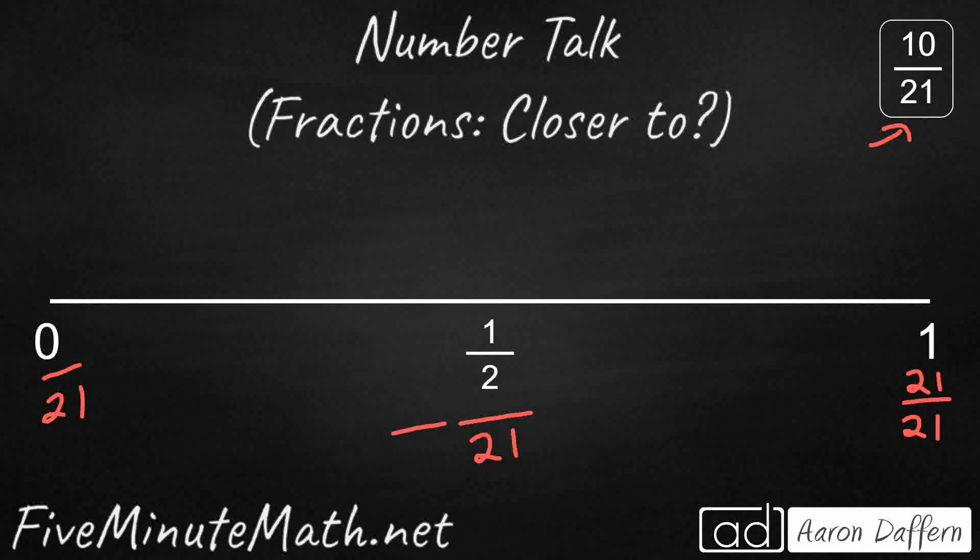So what would 1 below 21 be? Well, that would be 20. And half of 20 would be 10. So 1 above, 22. And half of that would be 11.